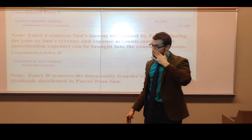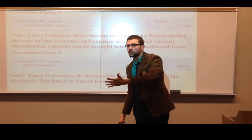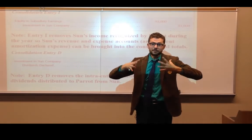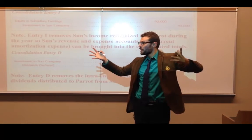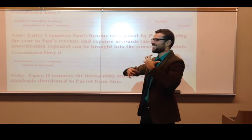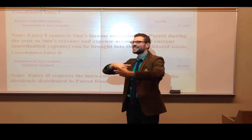So you'll see it's $93,000 in income. How do you get rid of this $93,000? Basically, all you got to do is eliminate the income account and you have to eliminate the investment account to the degree that you accrued income.